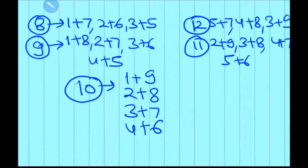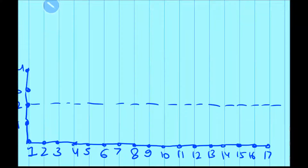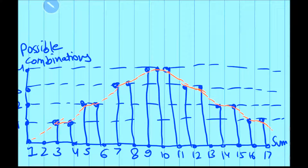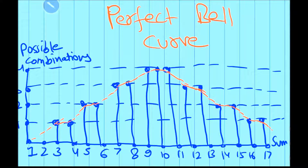So we can clearly see what is happening here. As we have the smallest number, it has just one possible combination, and possible combinations are increasing. They are maximum for sums 9, 10, and 11, and then again they decrease. So it is a perfect bell curve, and this may be an easy way to remember it. Using this, you will be able to solve puzzles faster as you keep practicing.